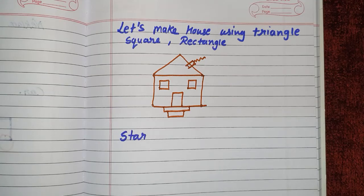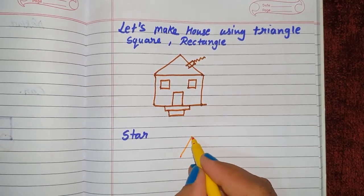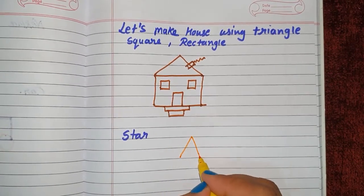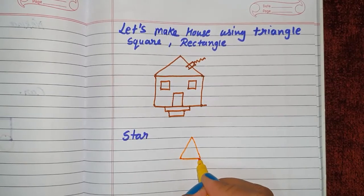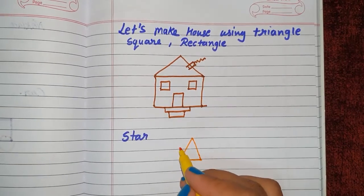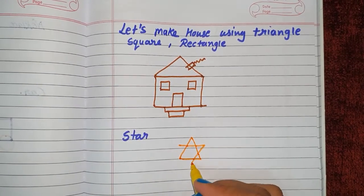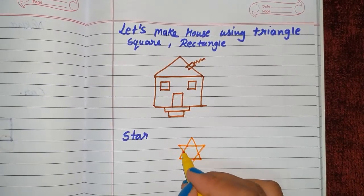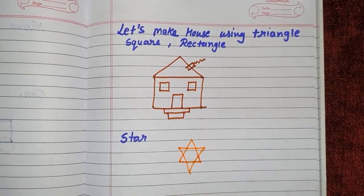Now I will draw a star using only triangles. First we make one triangle, then we make another triangle. Our star is ready!